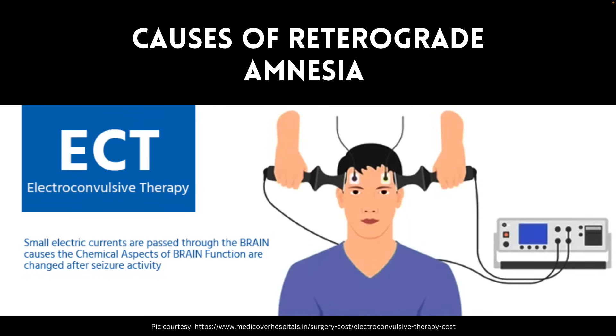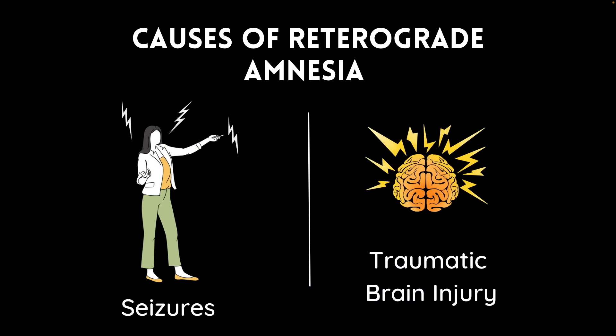Electroconvulsive therapy, or ECT, which is a treatment for depression and other psychiatric conditions that involves inducing a seizure with a brief electrical current, can cause retrograde amnesia-like memory loss. The memory loss caused by ECT may improve with time, but some people experience persistent memory gaps. Furthermore, seizures due to epilepsy or other causes can also damage areas of the brain associated with memory. Finally, traumatic brain injury, or TBI, can damage the brain due to stroke or other forms of injury and cause memory loss similar to retrograde amnesia.